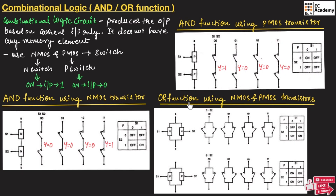Now let us understand the OR function using NMOS and PMOS transistors. To implement OR function, we connect NMOS in parallel and also PMOS in parallel. For AND function, 2 NMOS are in series and 2 PMOS are in series; for OR function, 2 NMOS are in parallel and 2 PMOS are in parallel. To implement OR function using NMOS transistors, we connect the transistors in parallel. For NMOS, the switch is ON only when the input is 1. When S1 is 0 and S2 is 0, both switches are OFF — there is no path, so output is 0.